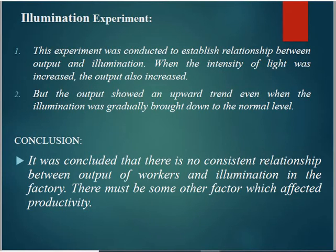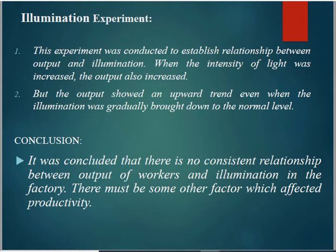The first experiment is the Illumination Experiment. It was conducted mainly to establish a relationship between output and illumination. When the intensity of the light was increased, productivity was expected to increase. But even when the intensity of the light was kept at a normal level, output did not change significantly. So the conclusion was: there is no consistent relationship between the output of workers and illumination in the factory.